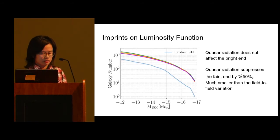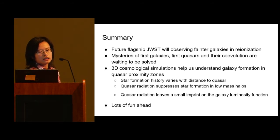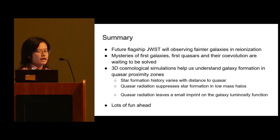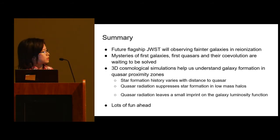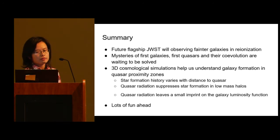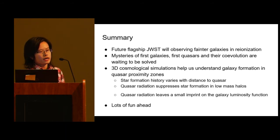I think my time is over, so here I show the summary. JWST will offer a lot of observational data about quasar galaxies in reionization. Using 3D cosmological simulations, we can understand a lot about galaxy formation around quasars. Three takeaways from the results I showed today: star formation varies with distance to quasars in quasar proximity zones; star formation history varies with distance to quasars; and quasar radiation leaves more imprints on the faint end of the galaxy luminosity function. With this suite of simulations, I'm also making synthetic spectra and trying to study what kind of physical quantities about the quasar and IGM I can recover from these synthetic spectra. There are lots of fun ahead. Thank you.